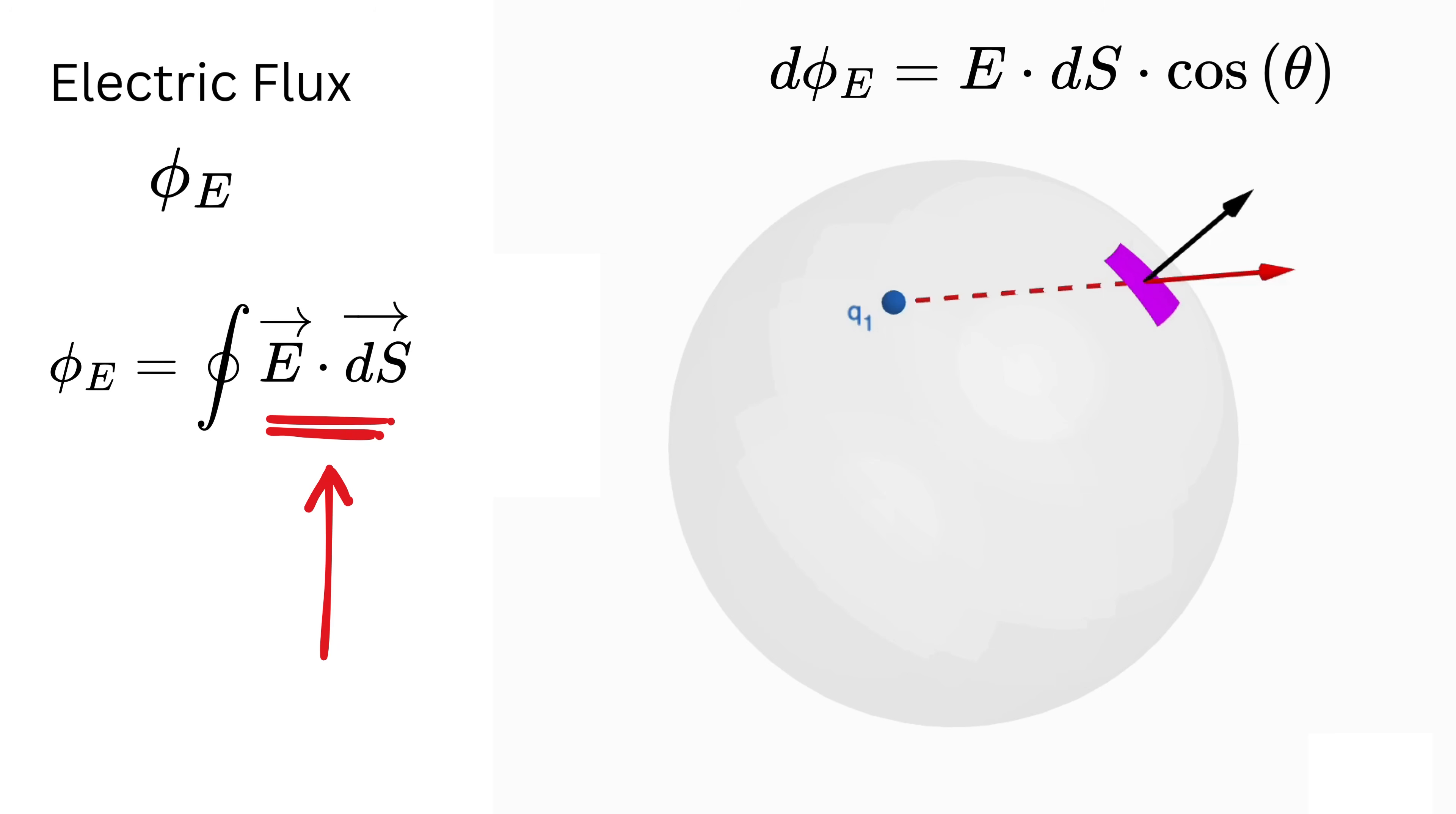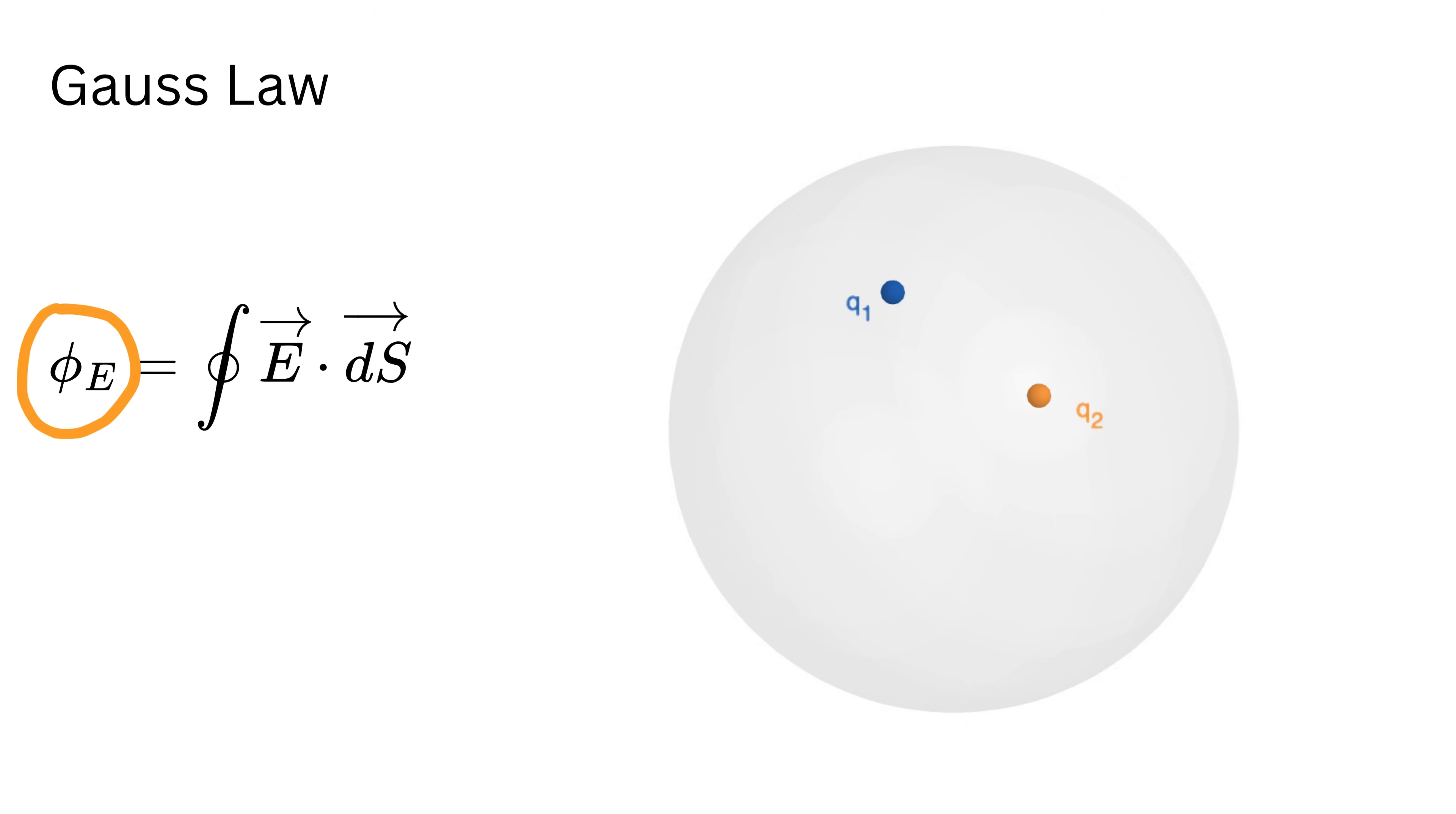Now you are ready for Gauss's Law. Gauss's Law links these ideas by saying that the total electric flux through any closed surface depends only on the total charge enclosed by that surface. That is, the total electric flux depends only on the sum of the q values trapped inside the football and nothing else.